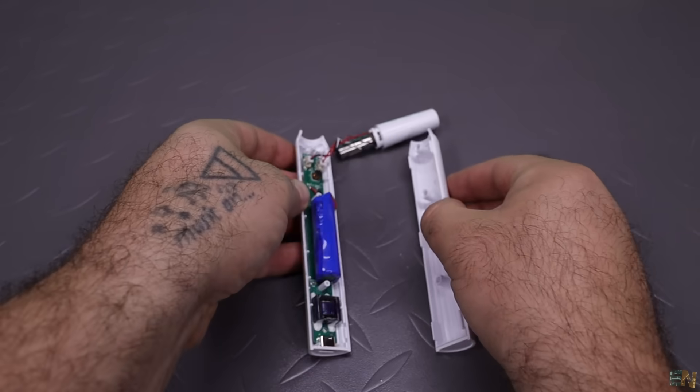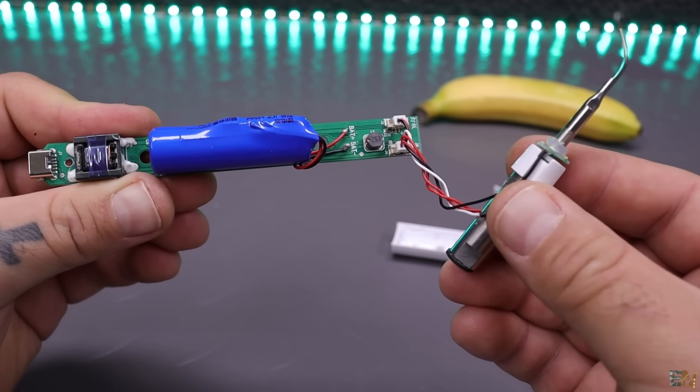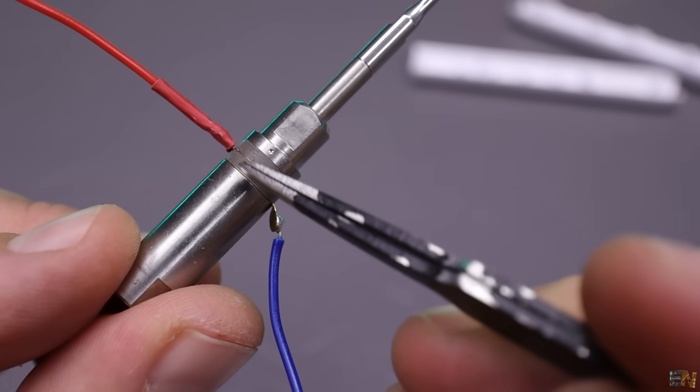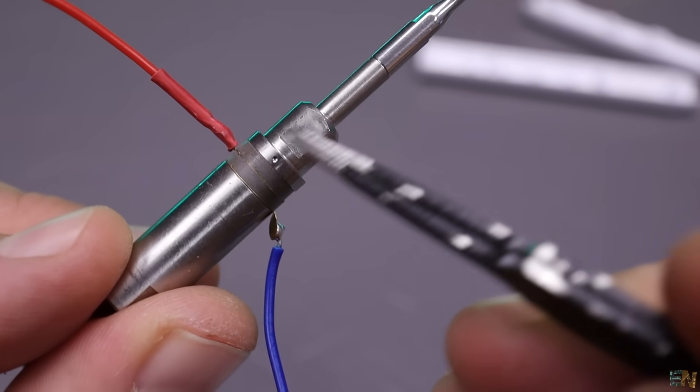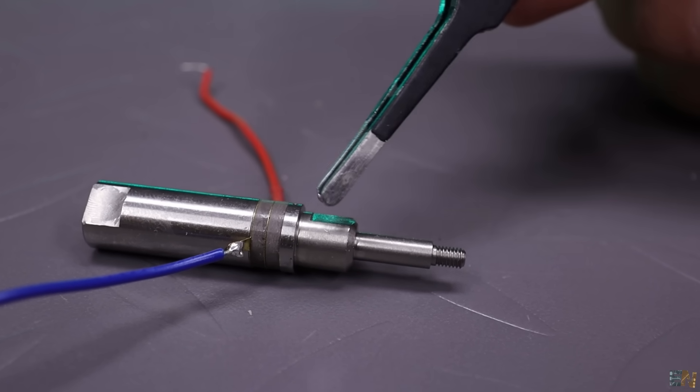As you can see we have yet another controller PCB and this metal part. This one has two piezo rings that are here glued between two metal blocks. This metal part is called the horn and is the most important part for this project to work.